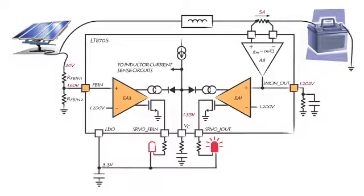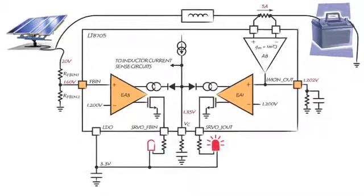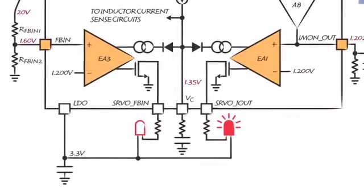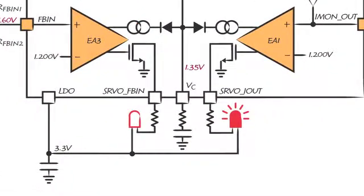Here the solar panel is getting enough energy from the sun so the panel voltage is at 20 volts and the LT8705 is not asking too much power from the panel. The battery charge current is at its limit of 5 amps so the LED corresponding to the output current regulation loop is lit.